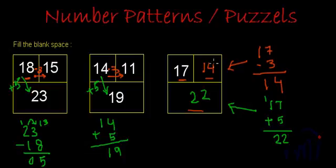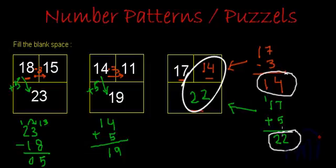We have found the solutions. The top right corner will be filled by 14, and the bottom empty space will be filled by 22. These are the solutions for this puzzle.